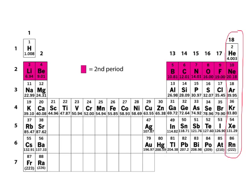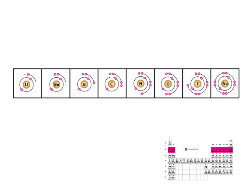What I've highlighted here is the second period of the periodic table. I want to look at the atoms as you go across this period and see how they behave differently from one another when they form bonds. You can see that I have laid them out, and what I'm showing you is their electron arrangement — a simple Bohr model — and what's important is their valence electrons.